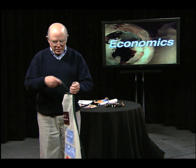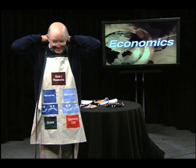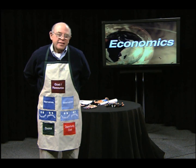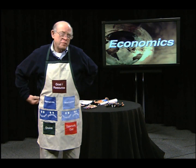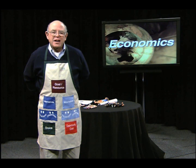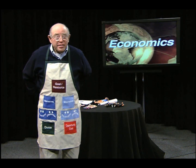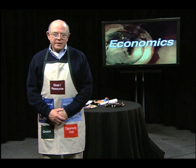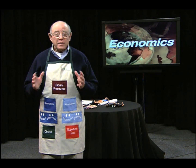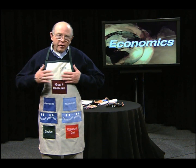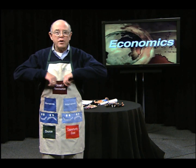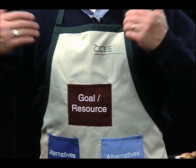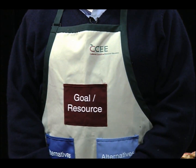This is called the decision-making apron. It's safe to say that absolutely everything — I want to repeat that — absolutely everything that economists do can be placed on this apron. Remember when we talked about the definition of economics? We said that it's about using your resources as effectively as possible to achieve your goals. The very first pocket on this apron says 'resources and goals.' So let's take this very difficult example and see if we can work through it to see how Sonia is going to achieve her goal.